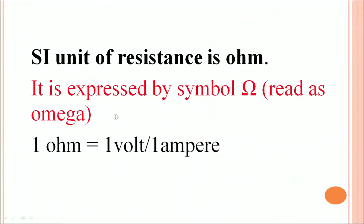What it means is that if you apply a potential of 1 volt across a conductor and it causes a current of 1 ampere to flow in the circuit, we say the resistance offered by the conductor is 1 ohm.